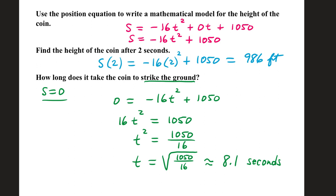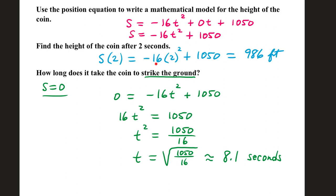Find the height of the coin after two seconds. We substitute 2 in. S of 2 is negative 16 times 2 squared plus 1,050. 2 squared is 4 times negative 16 is negative 64 plus 1,050 gives us 986. So after two seconds, the coin is 986 feet above ground.